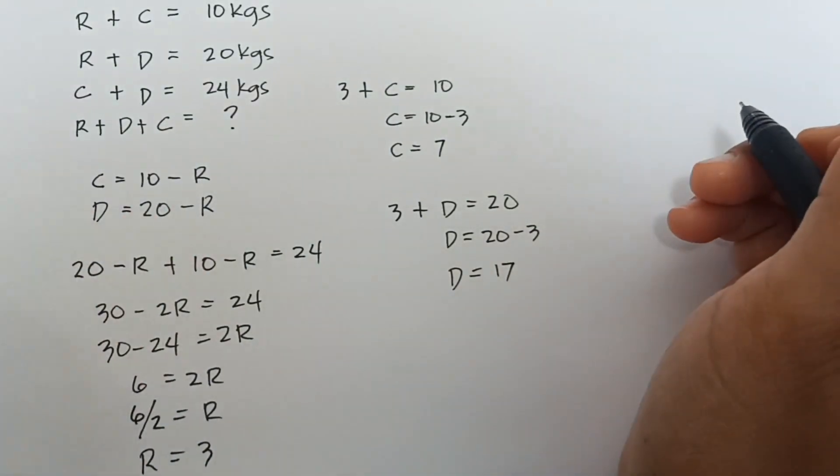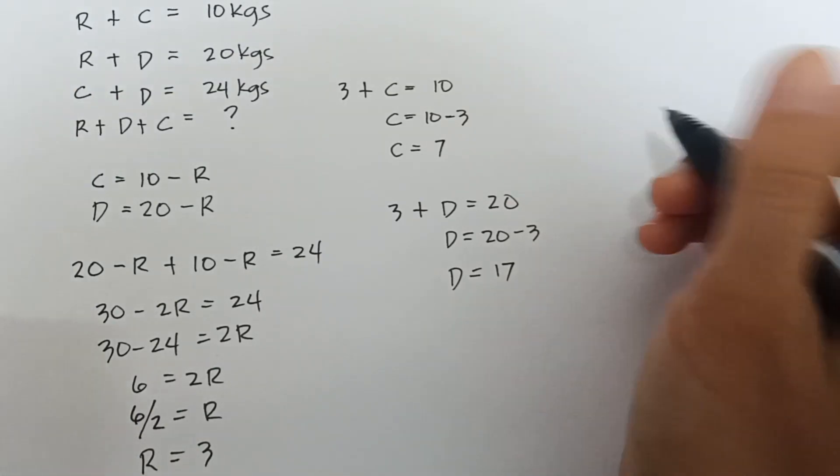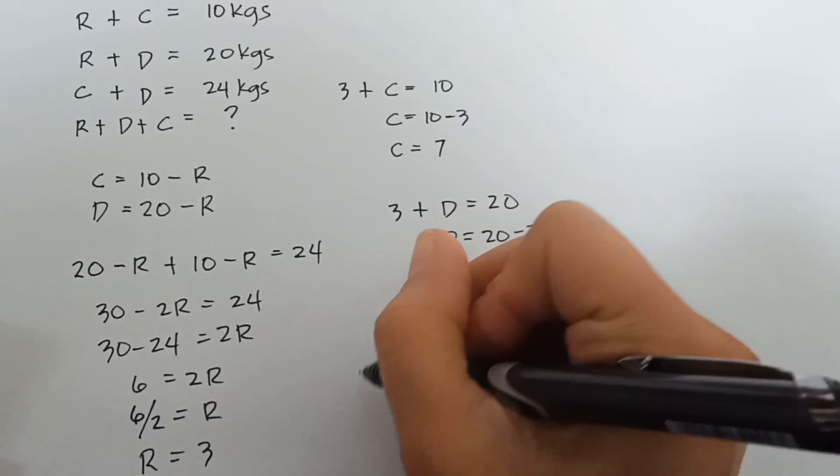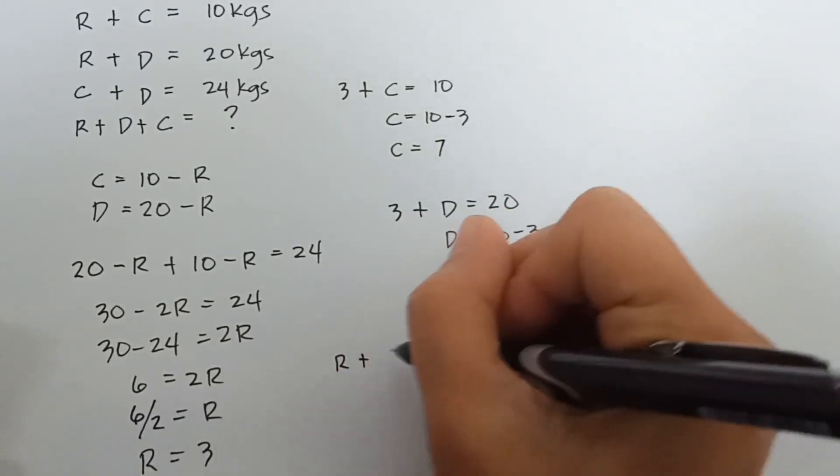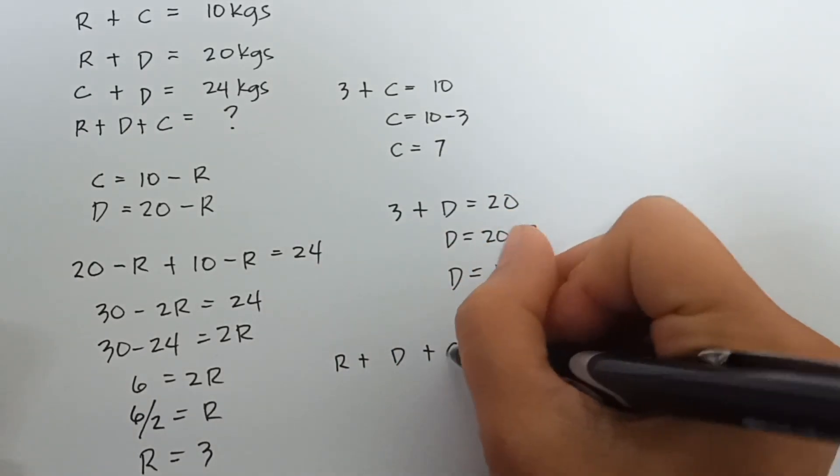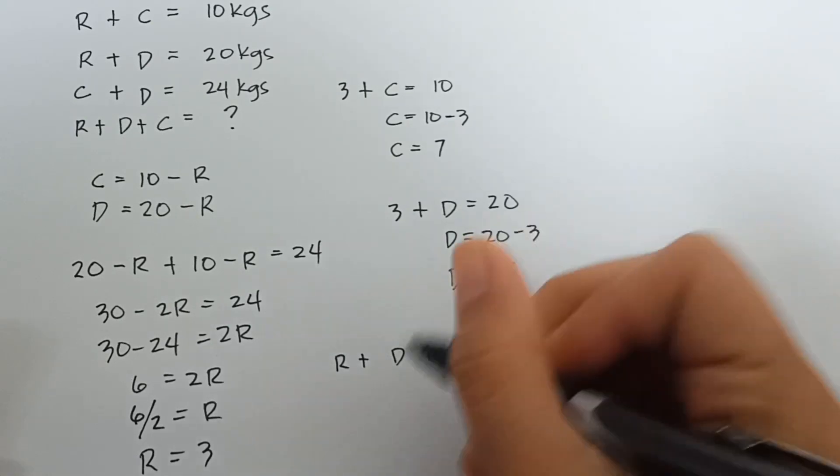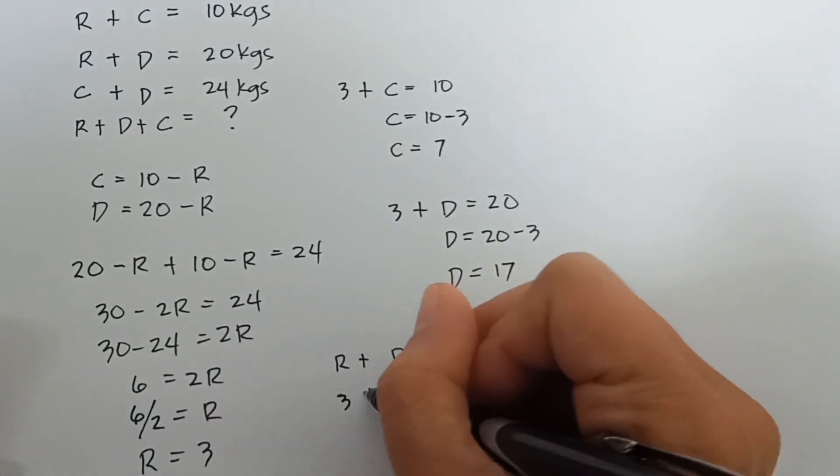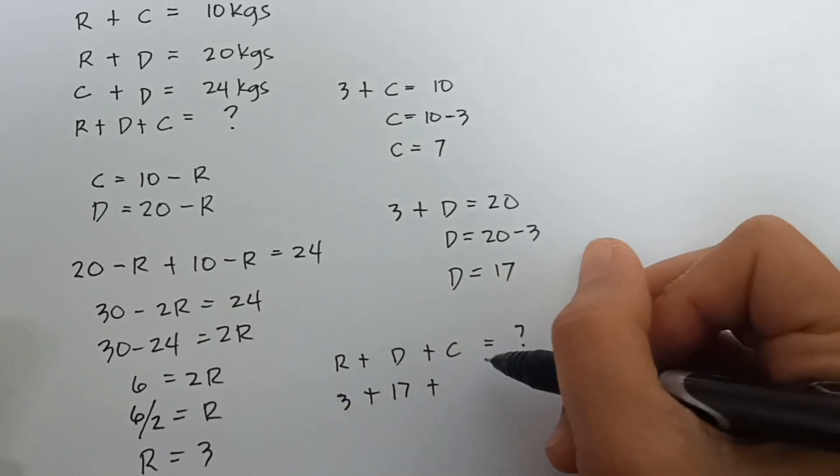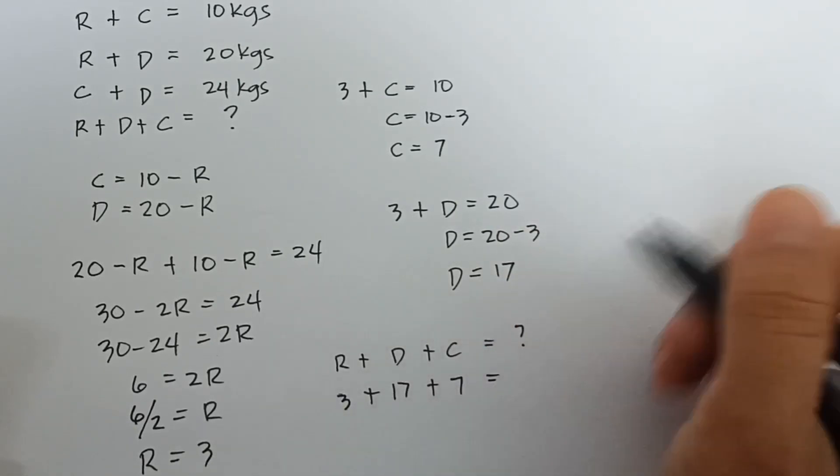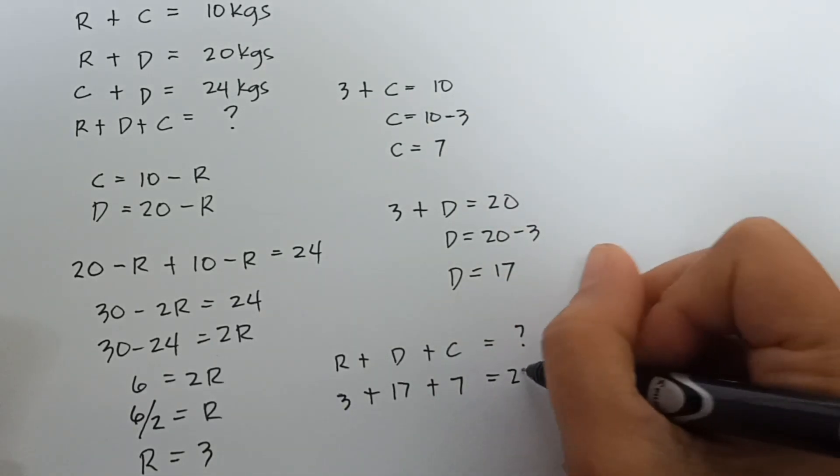So guys, we have the value of rabbit, cat, and the dog. Now, the question is rabbit plus dog plus cat equals what? So, rabbit, which is 3 plus dog, which is 17 plus cat, which is 7 equals 27.